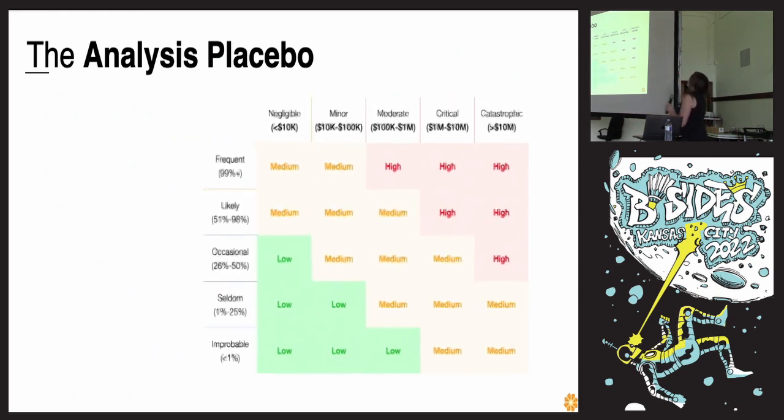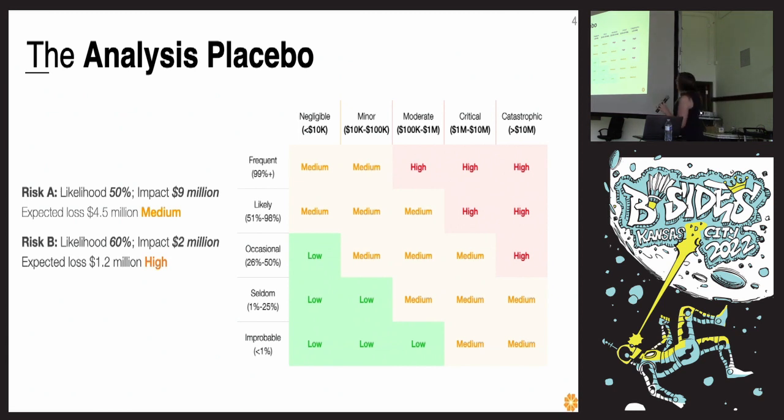So let's look at an example of this. Using this exact same risk matrix, we've got two risks that we're going to evaluate. Risk A has a likelihood of 50% and an impact of $9 million. Risk B has a likelihood of 60% and an impact of $2 million. So if we look at just the expected loss multiplying the two, you can see that risk B is a lot less likely than risk A. Risk A has over $4 million expected loss. Risk B only has $1.2 million. But if we use this scale, this totally normal scale, we would rate risk B as a high and risk A as a medium.